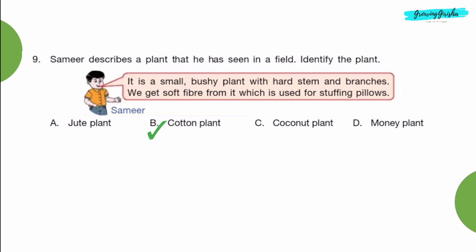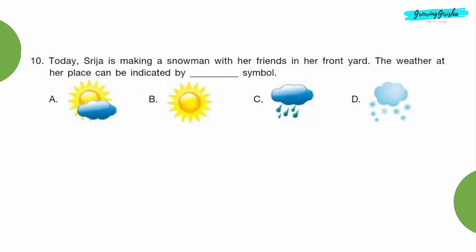Question 10: Today Srija is making a snowman with her friends in her front yard. The weather at her place can be indicated by dash symbol. Option D, snowfall.